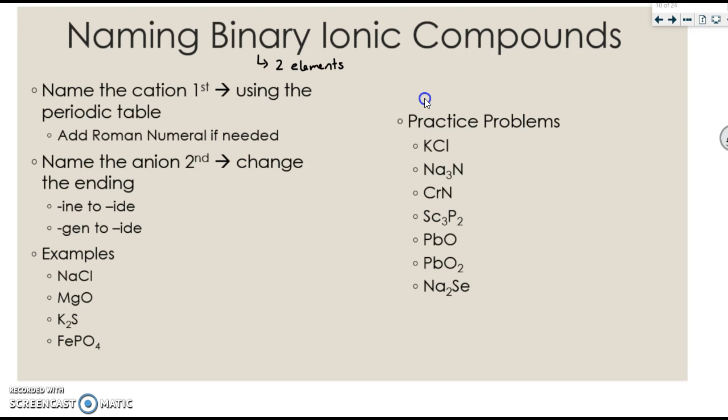For example, we have Na, which is sodium, and then we have Cl, which we now know changes to chloride. So the name would be sodium chloride. For the second example, Mg is magnesium and O changes to oxide.